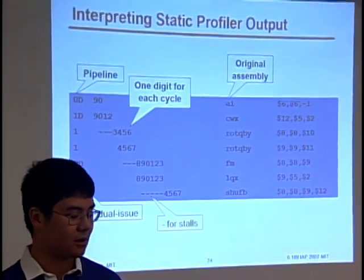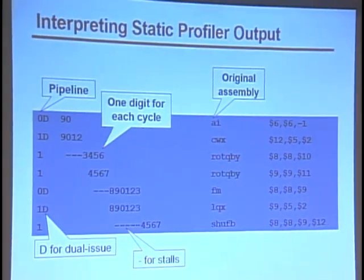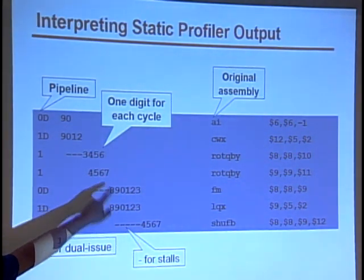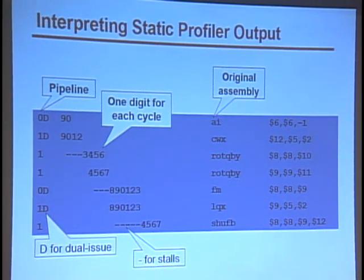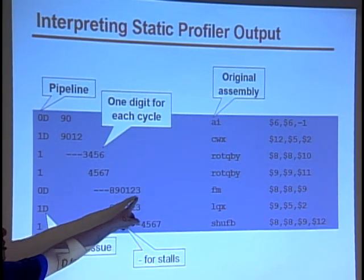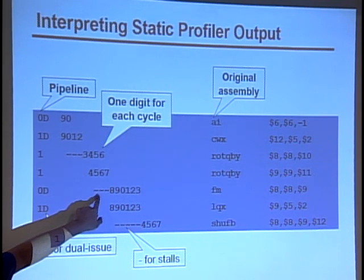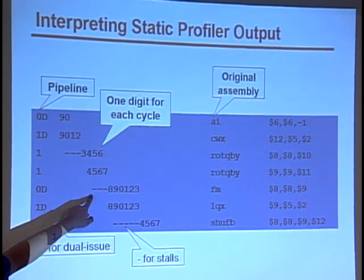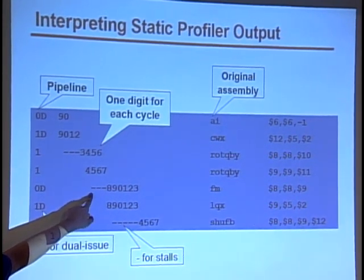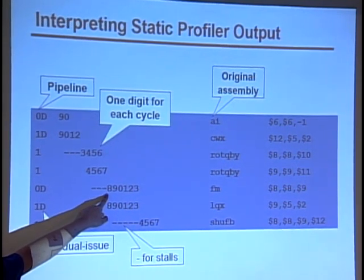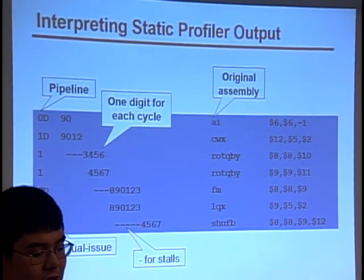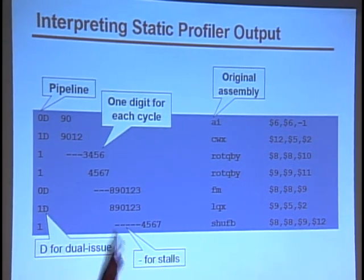The actual output of the static profiler will spit out a schedule of when each instruction runs. In the schedule, you'll see one digit for each cycle that the instruction is running — however many digits there are, that's how many cycles are being used. In front of some instructions you'll see dashes, which represent stalls. For example, three dashes in front of the fm instruction means that based on the pipeline you could have scheduled this instruction right after the previous one finished, but because you're waiting on particular dependencies, you're only able to schedule it three cycles later — that's a three-cycle stall. The original assembly appears on the right-hand side, and which pipeline the instructions go into shows up on the left.